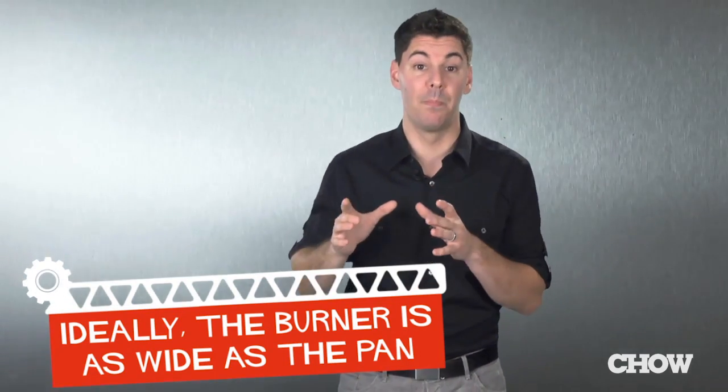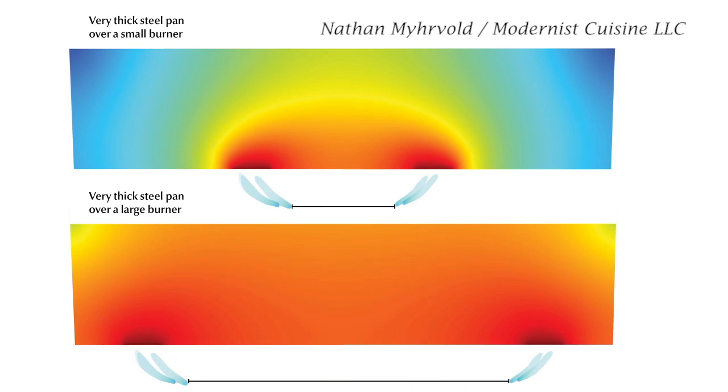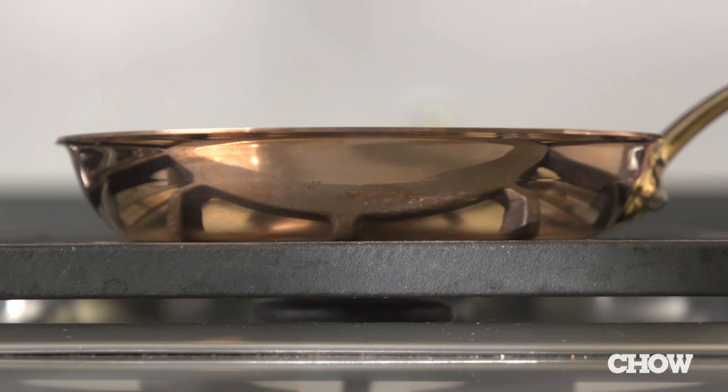Although thickness helps, even a two-inch thick skillet will still heat unevenly if it's placed on a burner that's too small. So when you're at the store, skip over those expensive copper pans.